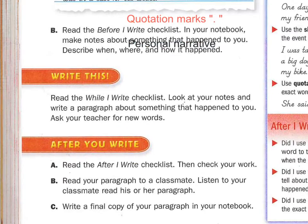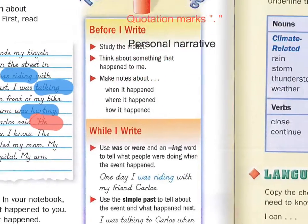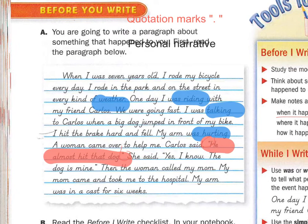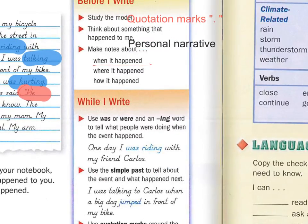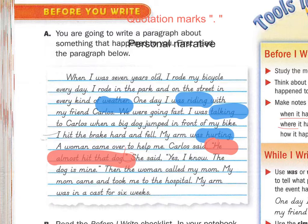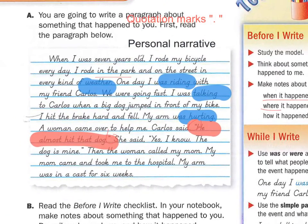As you think about something that happened to you, think about when it happened. In our example, it was when the writer was seven years old, and it happened on one day when he was riding with his friend. So: when did it happen? Where did it happen? Here we have 'in the park.' And how did it happen? What is the 'it' that happened? This story is about how he broke his arm. How did it happen? There was a big dog — he was riding his bike.